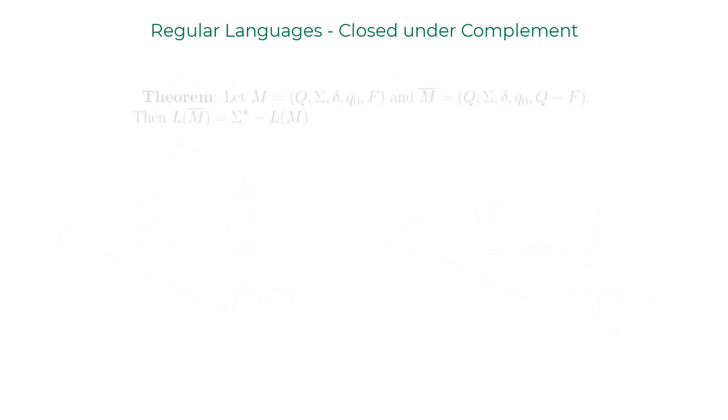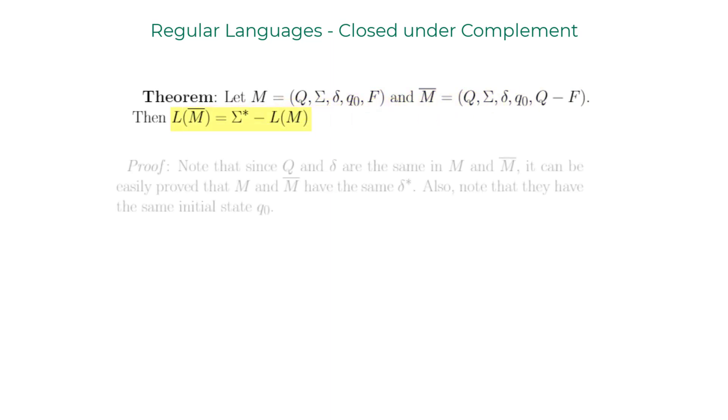Let's formalize this and upgrade the statement as a theorem. Given machines M and M-bar, we'd like to prove the language of M-bar equals sigma star minus the language of M. Note that the transition function delta for both M and M-bar are the same, so delta star is also the same. Both have the same initial state Q0. Let W be a string from sigma star.